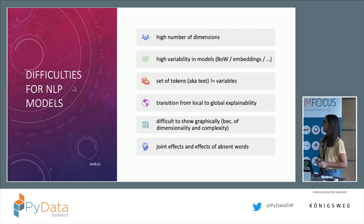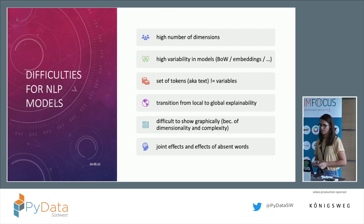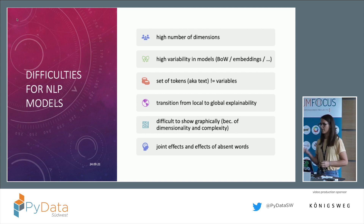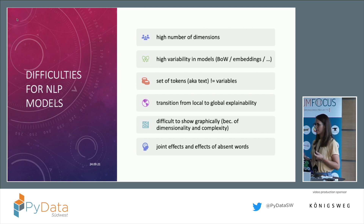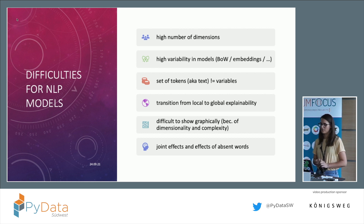It's also very difficult to transfer from local to global explainability — some models can do this, some can't, and it's important to keep that in mind. And it's difficult to show things graphically, because even with word embeddings you have to reduce dimensionality. You don't want to print out all your word vectors into a dictionary-sized book — nobody can work with that. So you have to reduce complexity and think about approachable ways to show this.